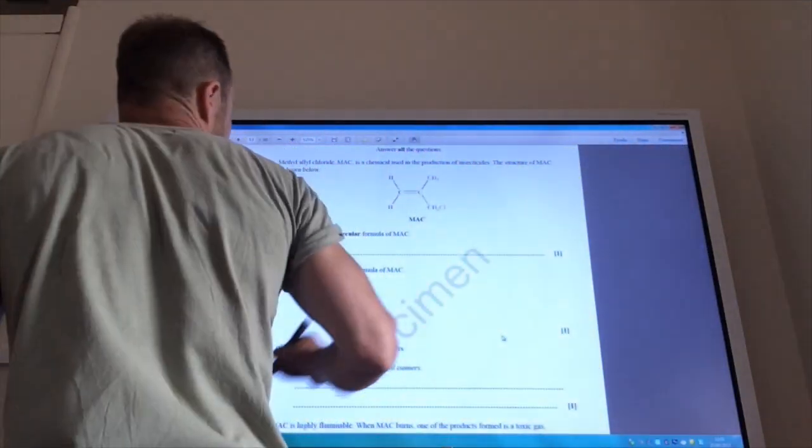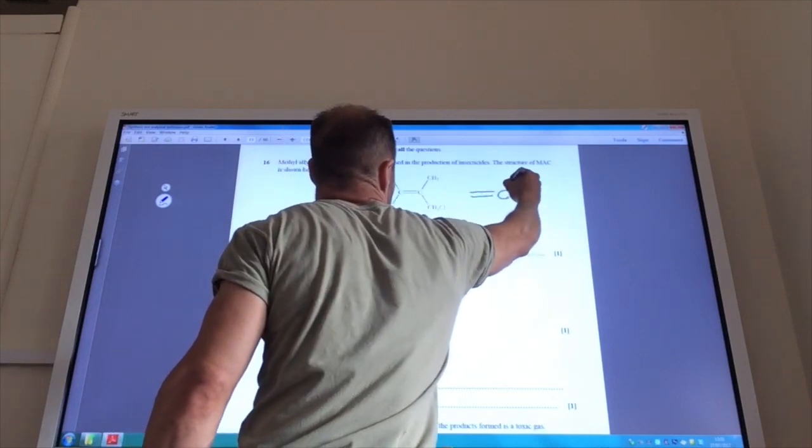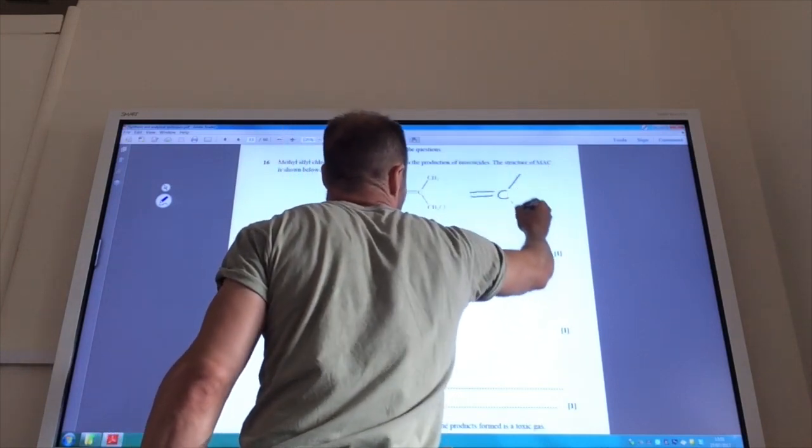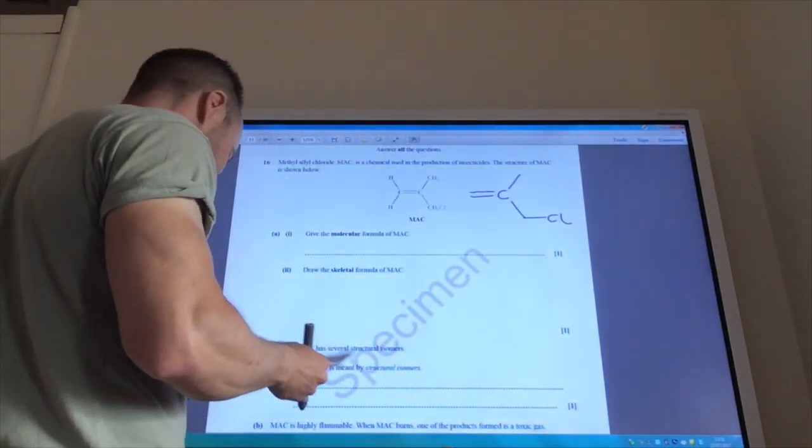Do you want the skeletal formula of Mach? Well, you've got your double bond there, then you've got your methyl group there, then you've got your CH2 group there, and then you've got your CL group there.